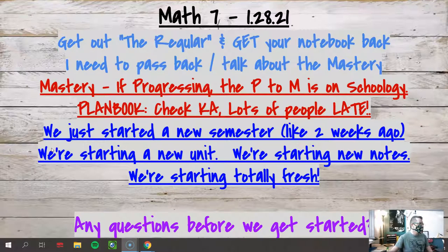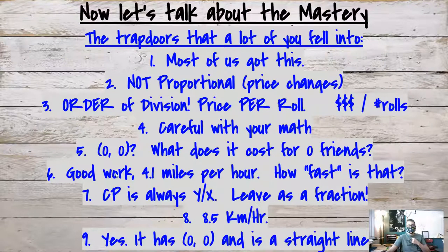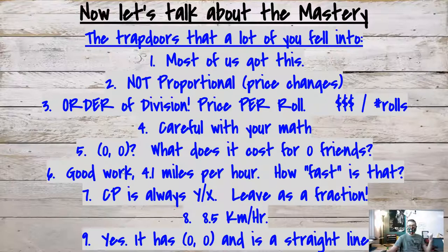If you don't have a dedicated math notebook, you need to figure that out - I can help. If you're using loose leaf graph paper and need a binder, I can loan you one. If you haven't gotten your math notebook back yet, please do that. On the mastery, look at what you missed and look up here at what I've typed up for the trap door. I'll give you a minute to look at it on your own.